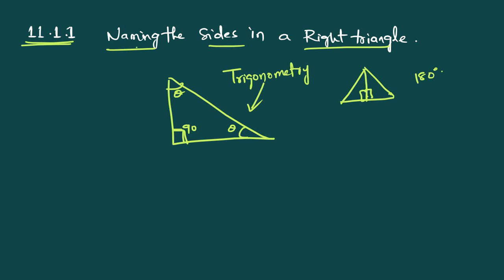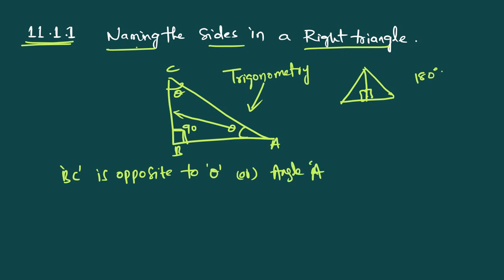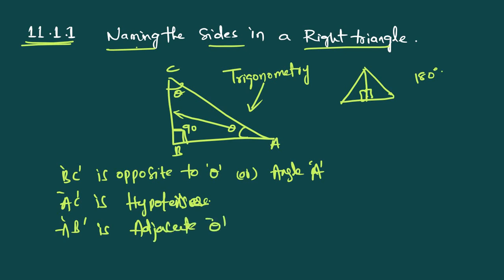We need to name the sides of the right triangle. The side opposite to theta (angle A) is BC. The side AC is the hypotenuse. The side AB is adjacent to theta. These are the three important sides we name in a right angle triangle: opposite, hypotenuse, and adjacent.